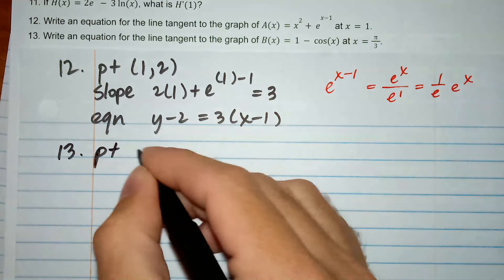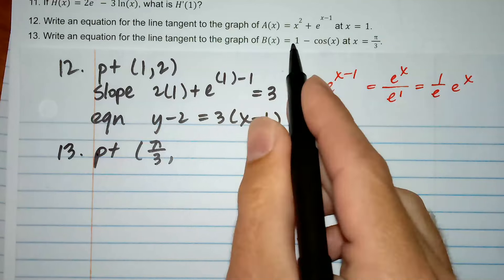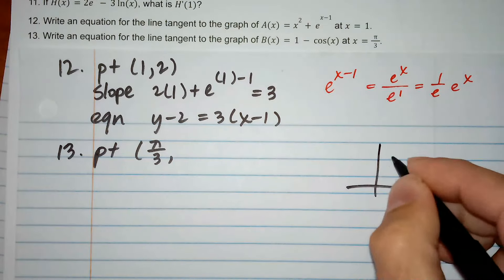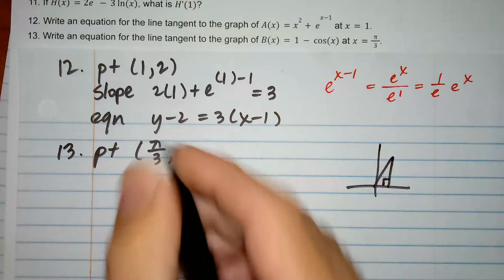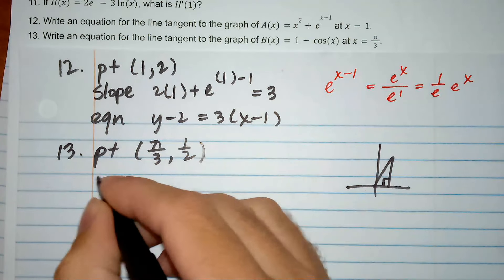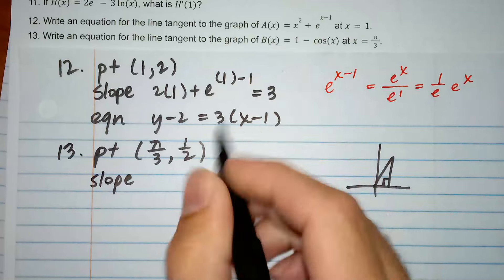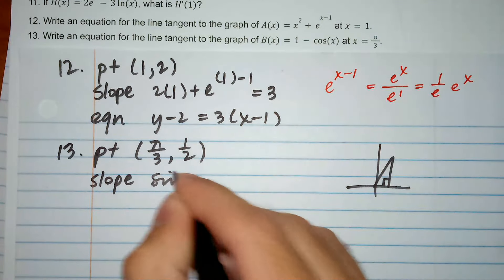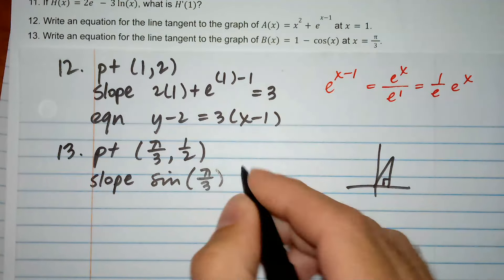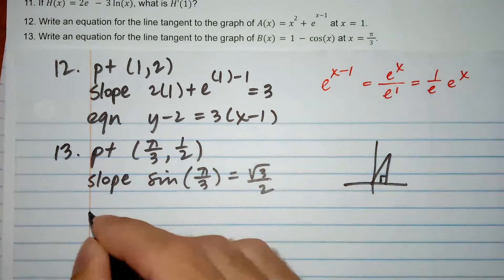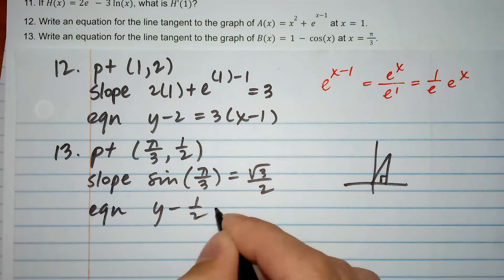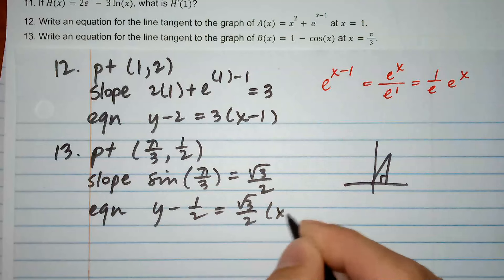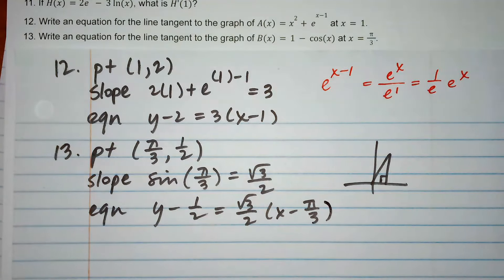For number 13, my point is x equals π/3, y equals 1 minus cosine of π/3. Cosine of π/3 is a half, so 1 minus a half is a half. For the slope, the derivative is 0 minus negative sine — that's sine of π/3, which is root 3 over 2. The equation is y minus 1/2 equals root 3 over 2 times x minus π/3. That's a classic introductory tangent line question right there. That's all for this video — that was plenty long, thanks for watching.